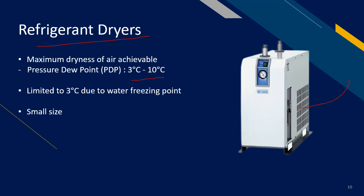Pressure dew point is the unit used to measure air dryness. The pressure dew point is limited to 3 degrees Celsius because anything below that is when water freezes. Therefore, refrigerant dryers can only provide a maximum dryness of 3 degrees Celsius PDP. Other than that, these refrigerant dryers are also relatively small in size, as shown in the picture here.